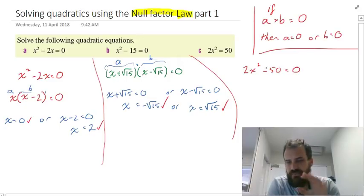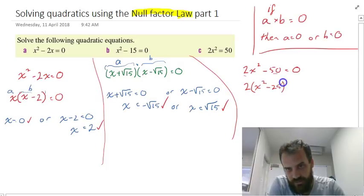And now I can just factorize that. I can see a common factor here of 2. So I can bring 2 to the outside, and we end up with 2(x² - 25) = 0.